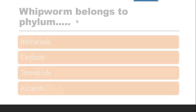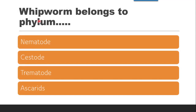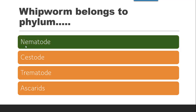Next question: Whipworm belongs to phylum — whether it is nematode, cestode, trematode, or Ascariasis. The correct answer is nematode. Nematode includes whipworm, roundworm, pinworm, etc.